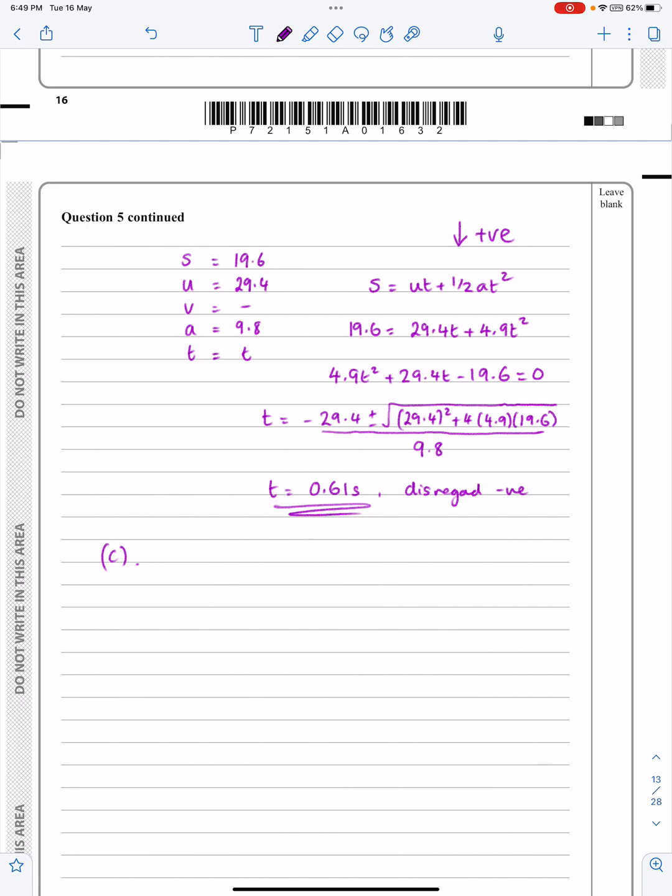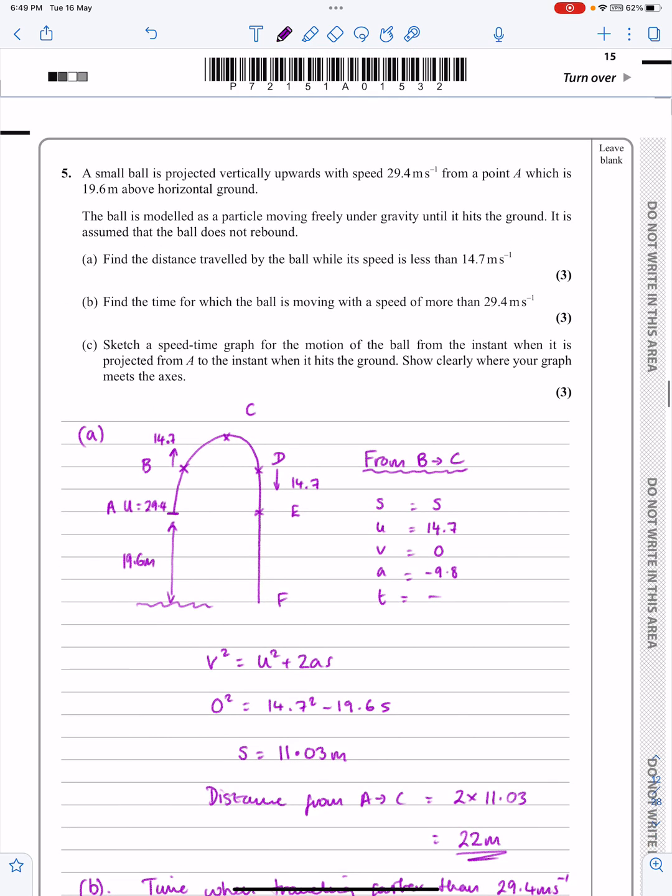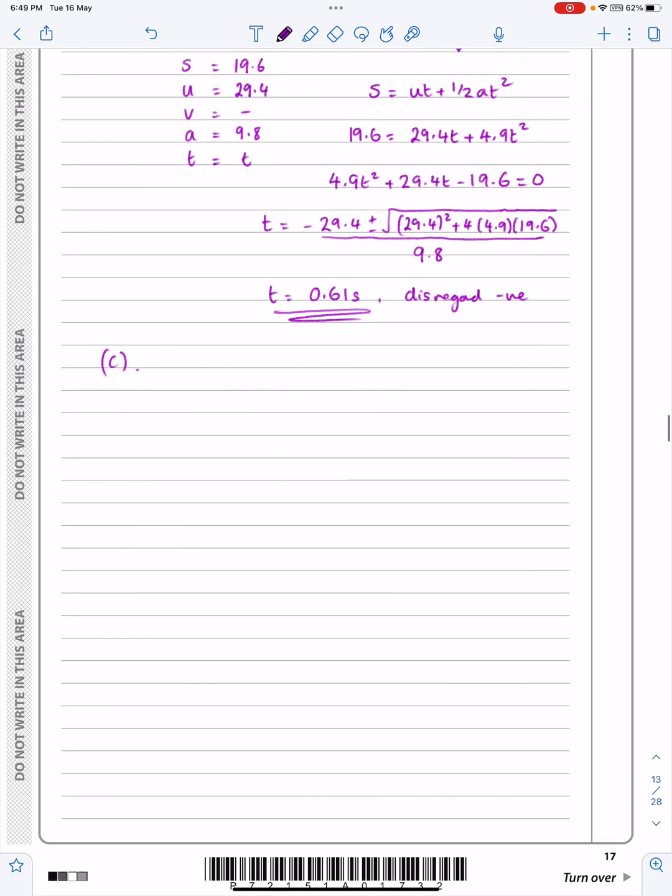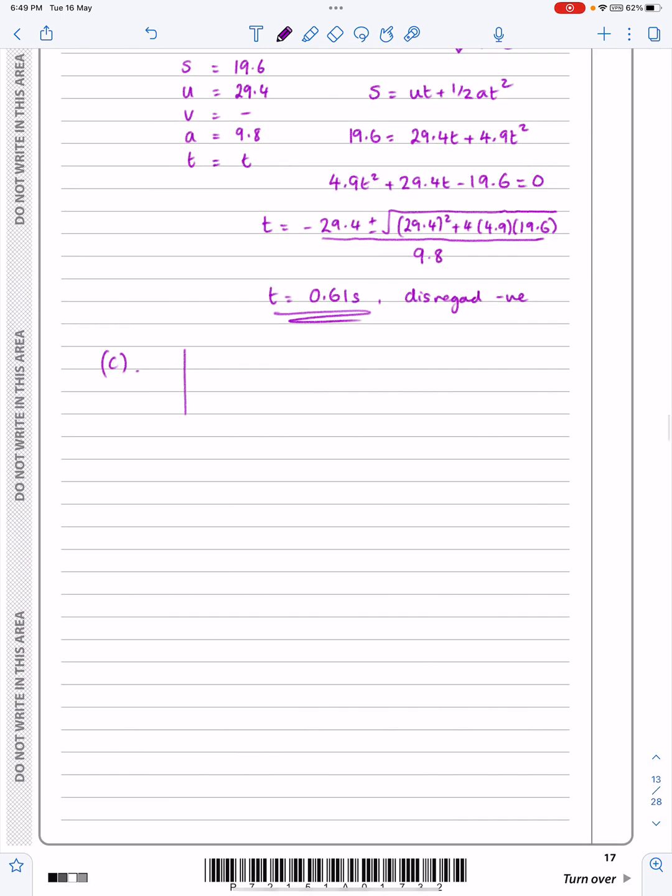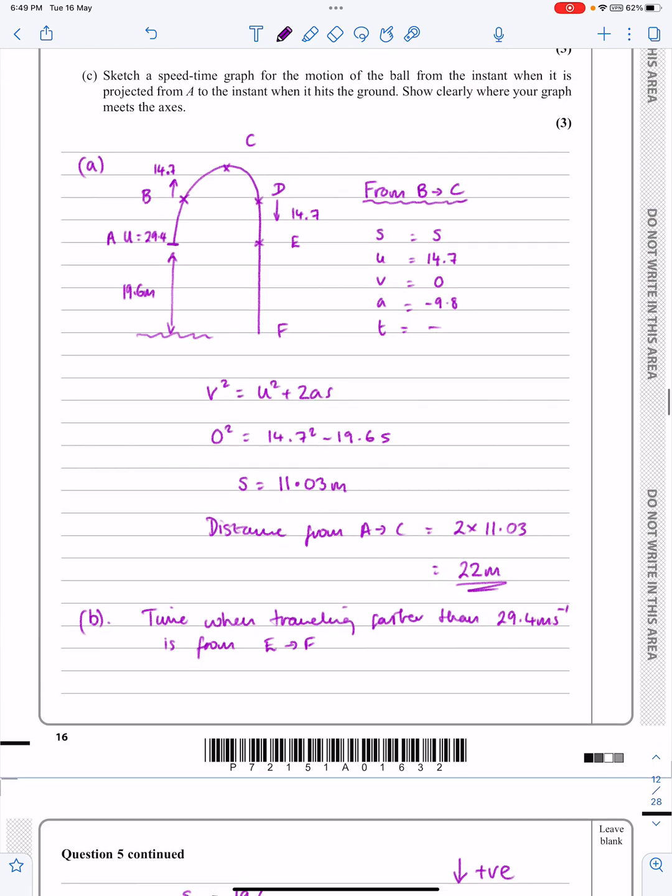So part C just says, sketch a speed time graph for the motion of the ball from the instant when it's projected from A to when it hits the ground and show clearly where your graph meets the axes. Yeah, absolutely no problem with that at all. This should be fairly straightforward for most of you. The positive time graph. And just quickly talk through it and then we'll do it. We'll talk through this a couple of times, I guess.